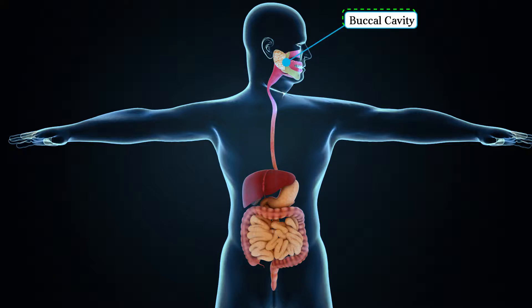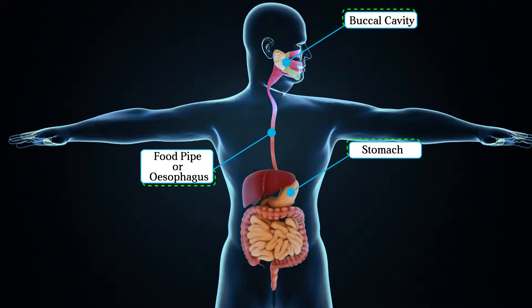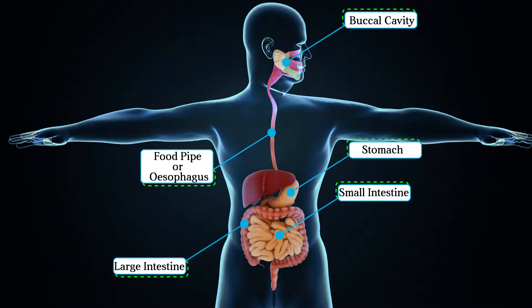The different parts of the alimentary canal are: Buccal cavity, Food pipe or Esophagus, Stomach, Small intestine, Large intestine, and Anus.